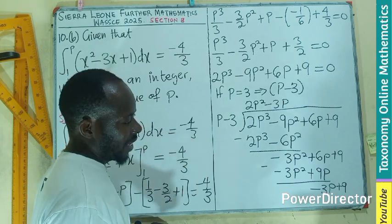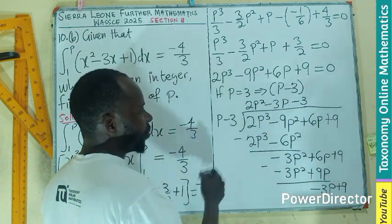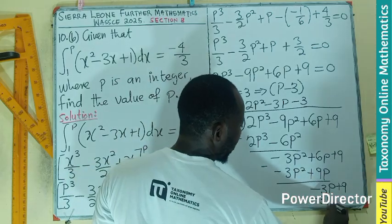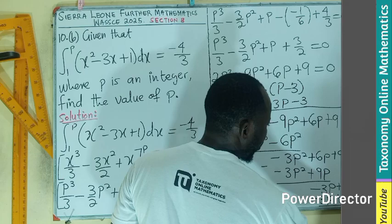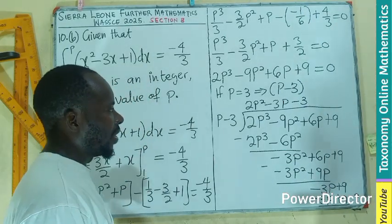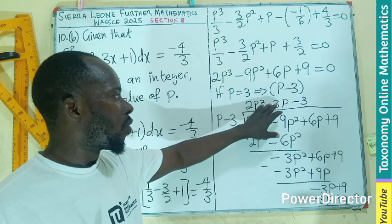When p goes in there, it will be going there minus 3, which multiplied the first part to give you minus 3p. The second part to give you plus 9.